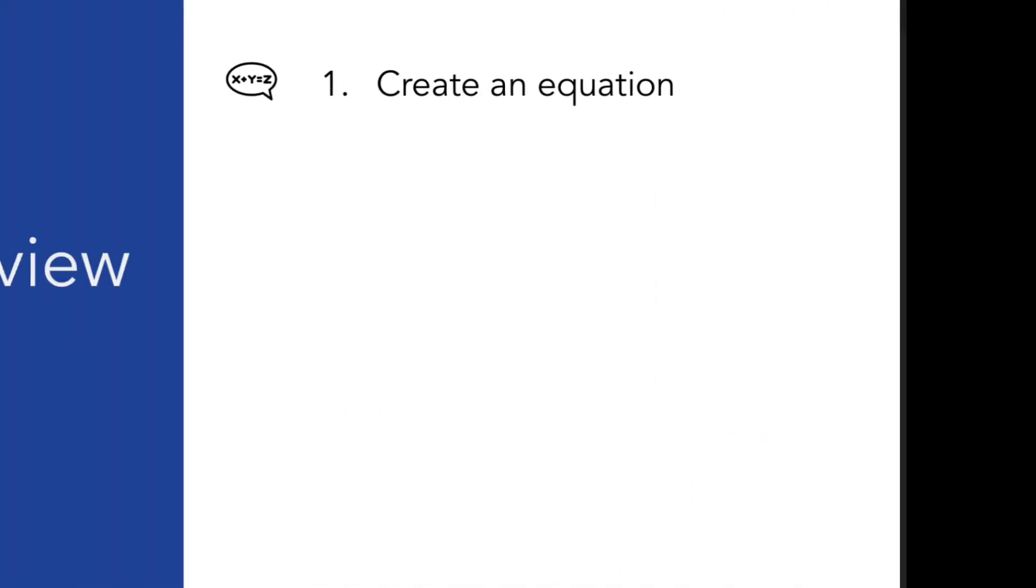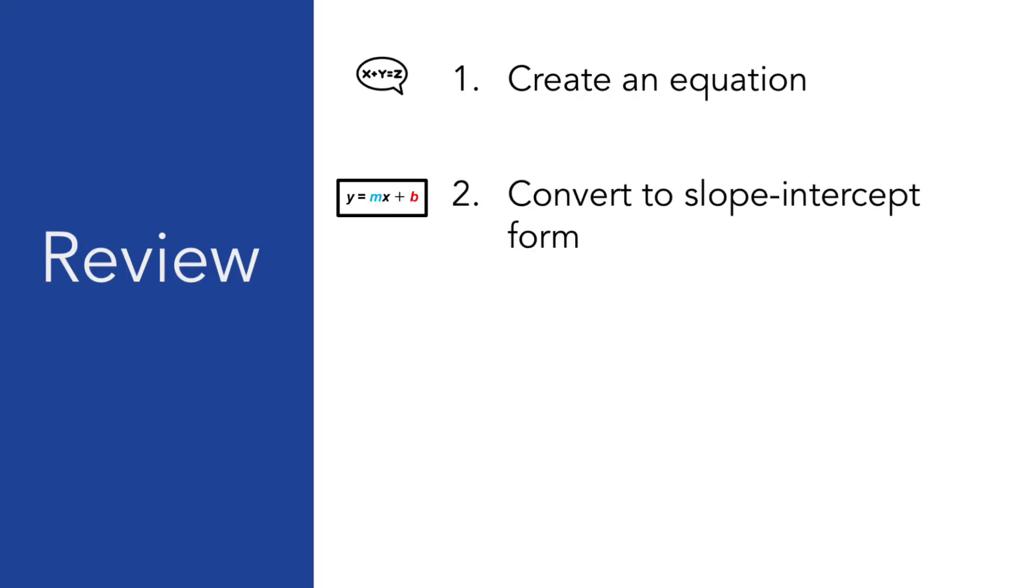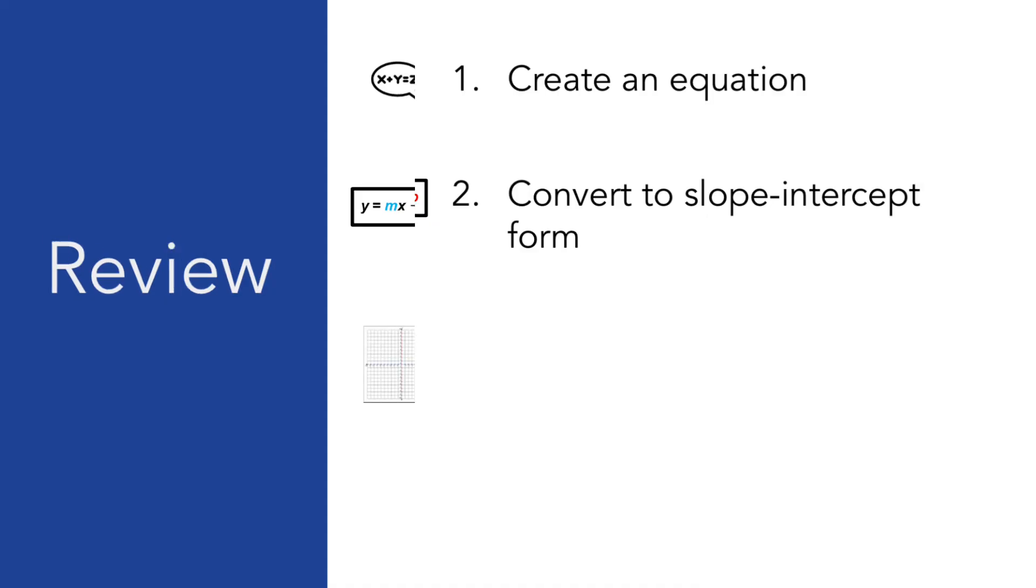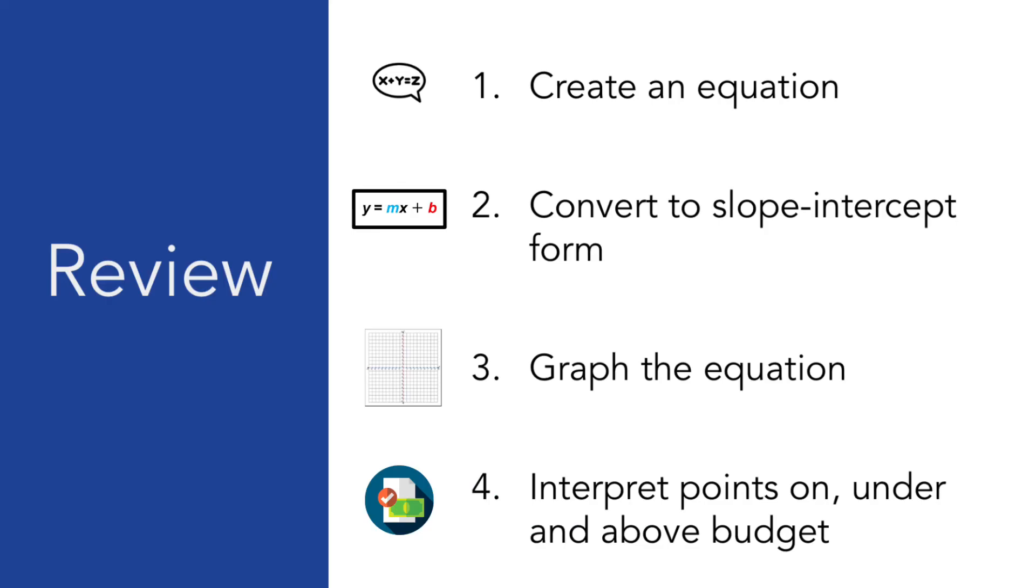Let's review everything we did. We first created an equation to represent the problem. Then we converted to slope-intercept form, or y equals mx plus b. Next, we then graphed the equation using slope-intercept form. The last step was to interpret the points on, under, and above the budget equation line.